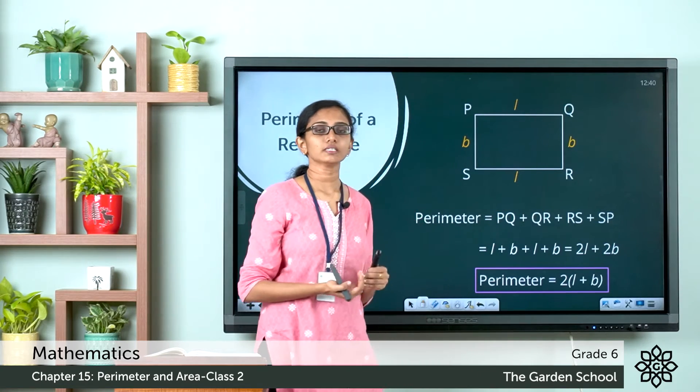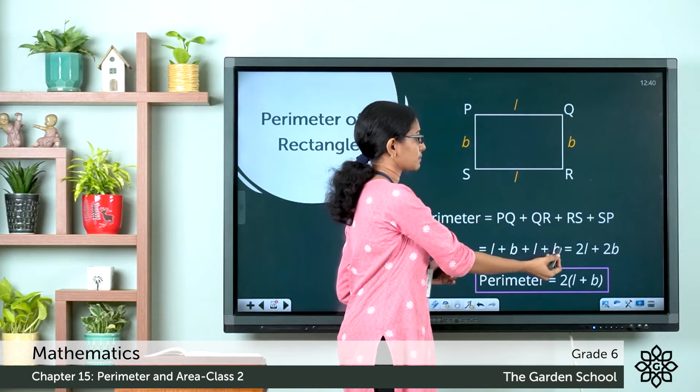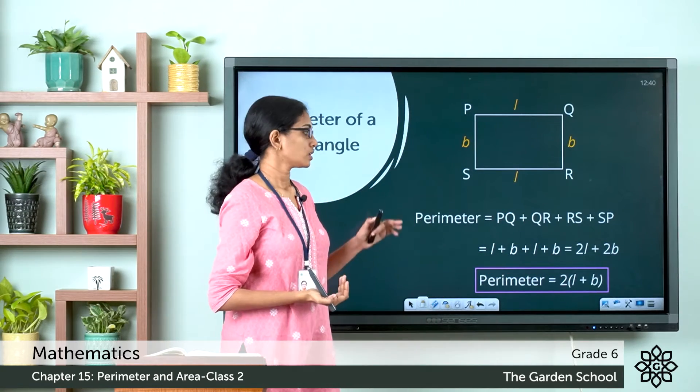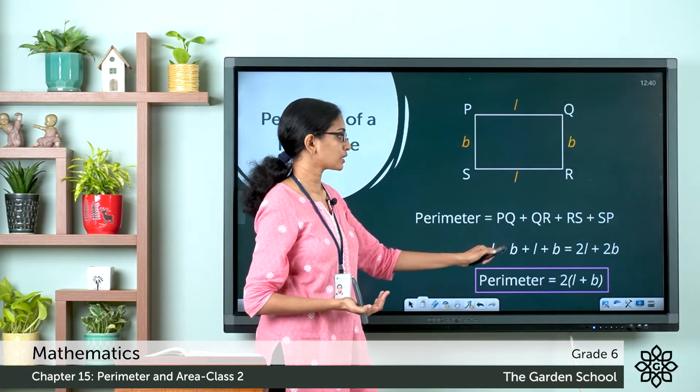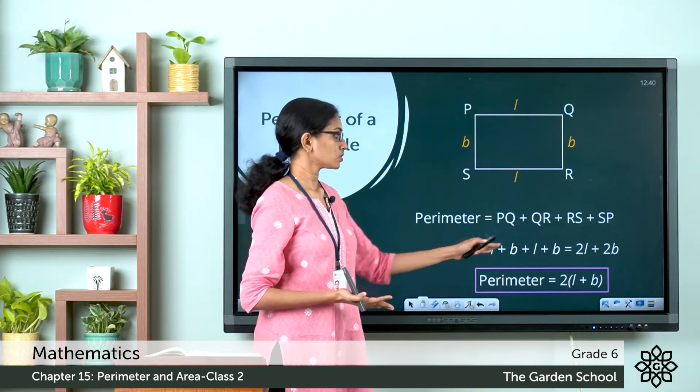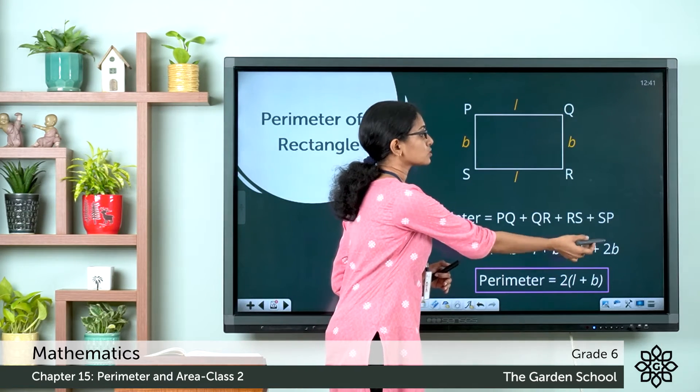Now RS represents the length L, and SP represents the breadth B. When we add these together, there are two L's and two B's. So this expression here is equal to 2 times L plus 2 times B.